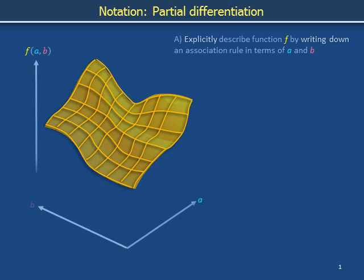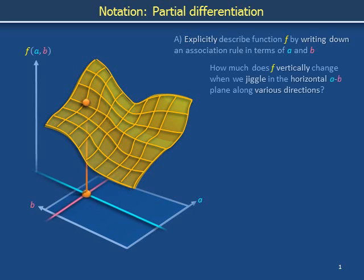Explicitly describe function f by writing down an association rule in terms of variables a and b. We can potentially calculate a variety of slopes by exploring the horizontal plane along different directions. We can hold a constant while varying b, vary a and b together, or instead vary a while holding b constant. The change in vertical height of f can depend on the direction in the a-b plane in which we choose to wiggle.